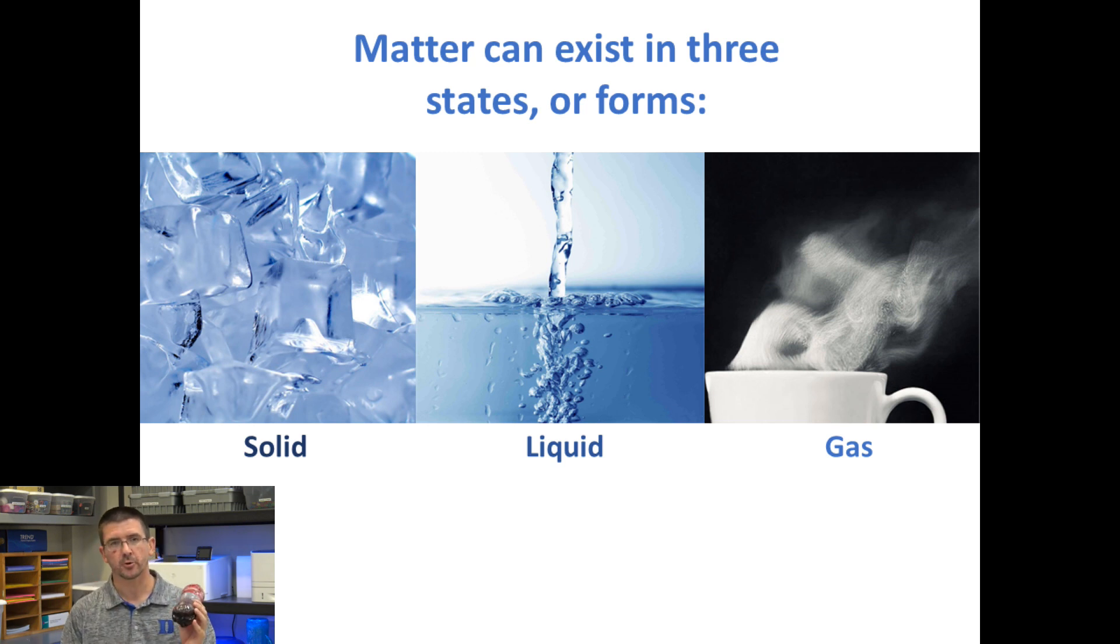The liquid in the bottle, on the other hand, is a liquid, which is our second state. And liquids actually take the shape of the container they're in. If I turn the bottle, the liquid will shift, it'll adjust, it'll change its shape because the molecules are able to move more freely.